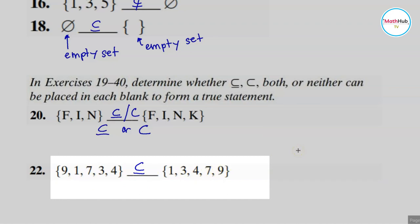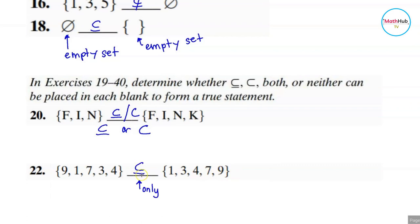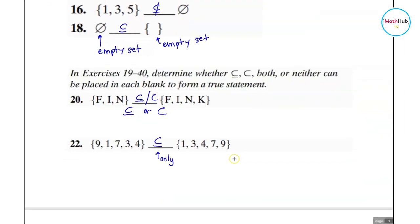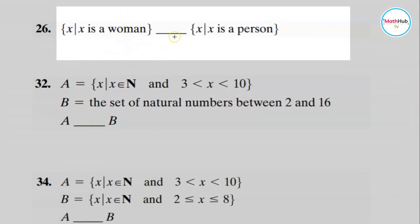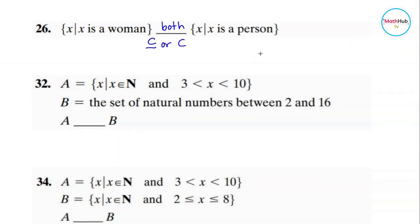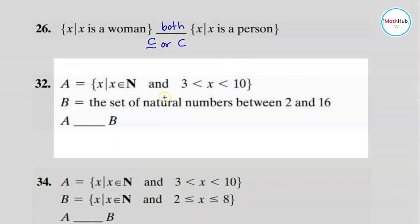So for number 22, you can write subset only. Now for the next one: {x | x is a woman} compared to {x | x is a person} — for this one you can write both subset and proper subset.